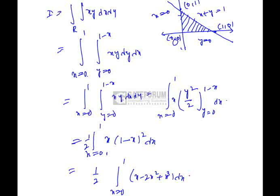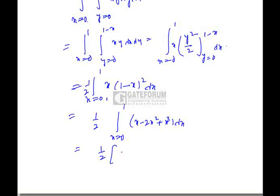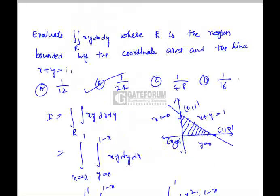If I expand and simplify, the integration is half into x square by 2 minus 2x cube by 3 plus x power 4 by 4 between the limits 0 and 1. If I substitute the limits, the value will be 1 by 24, which is option B.